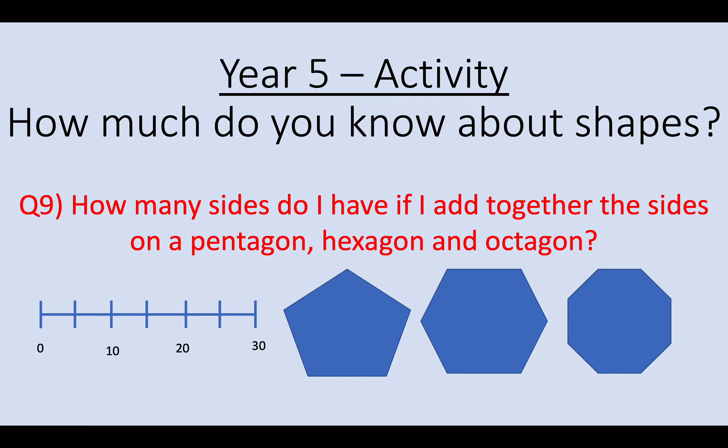Question 9. How many sides do I have if I add together the sides on a pentagon, a hexagon and an octagon? So a pentagon is 5 sides. That was the first shape shown. A hexagon has 6 sides. That was the middle shape that was shown. And an octagon has 8 sides. That was the right hand side shape that was shown. So 5 plus 6 plus 8 means altogether I have 19 sides.